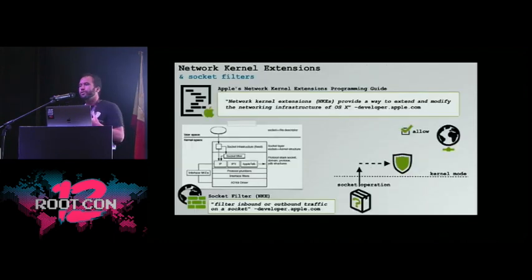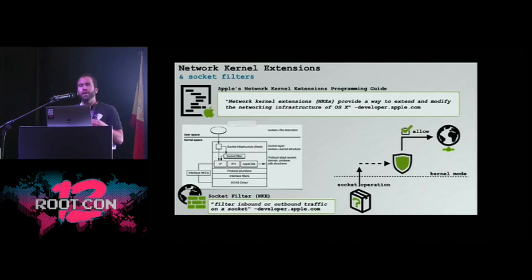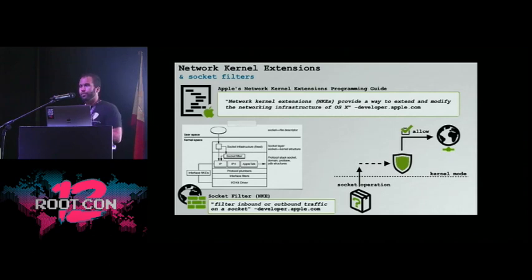Since we want to monitor all traffic globally, we're going to have to write a kernel extension. In macOS, Apple provides something called network kernel extensions, or NKEs, which provide a way to extend or modify the network infrastructure in the kernel. One type of NKE is a socket filter, which allows you to filter network traffic at the socket level — which, for a firewall, is exactly what you want.